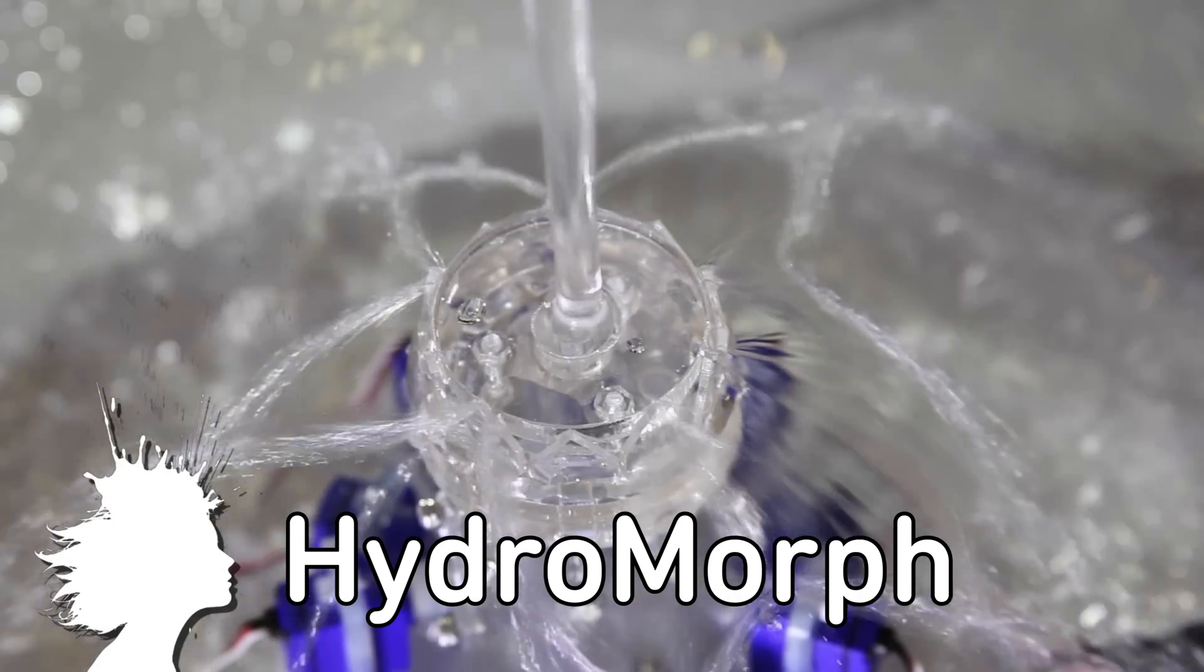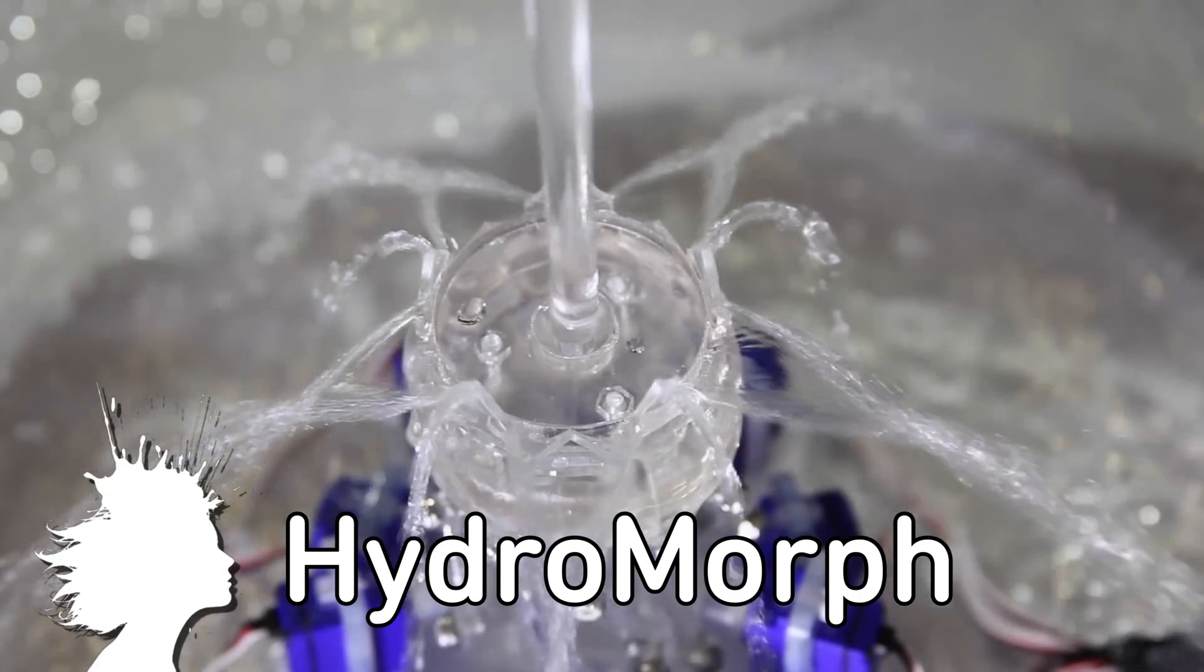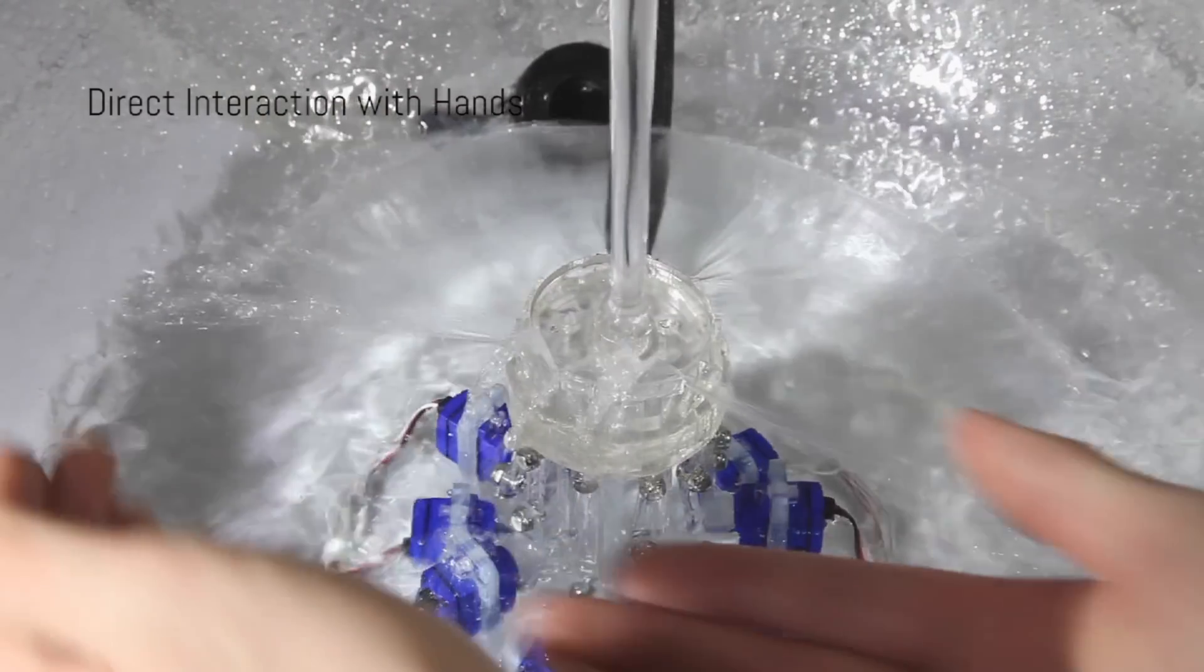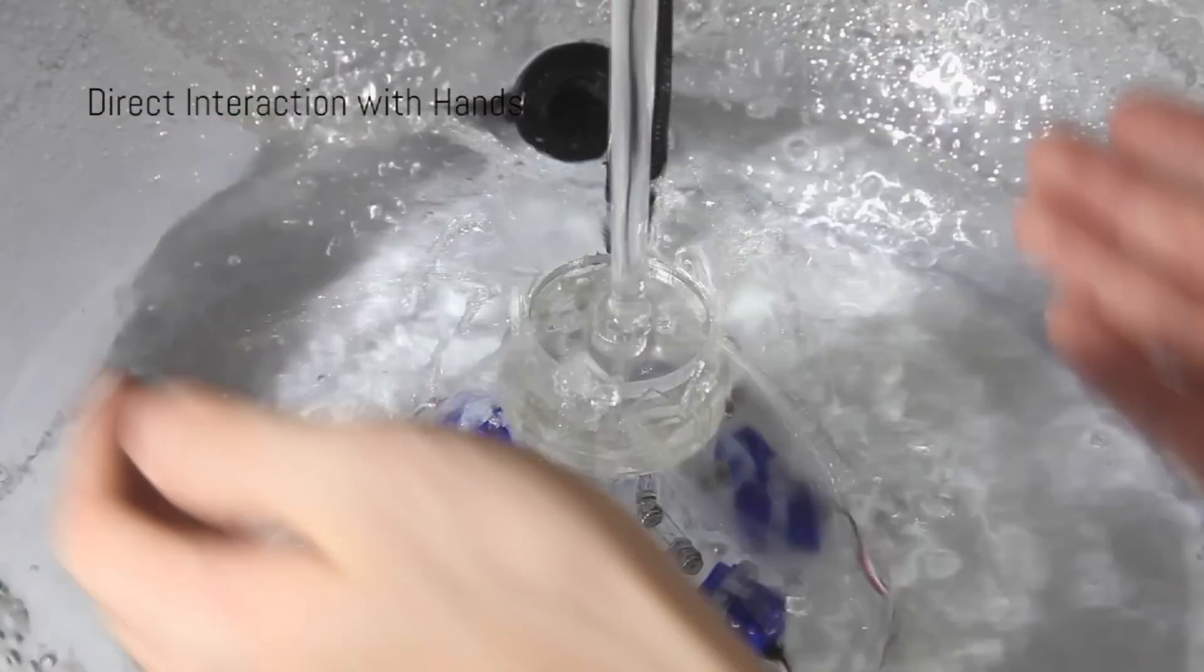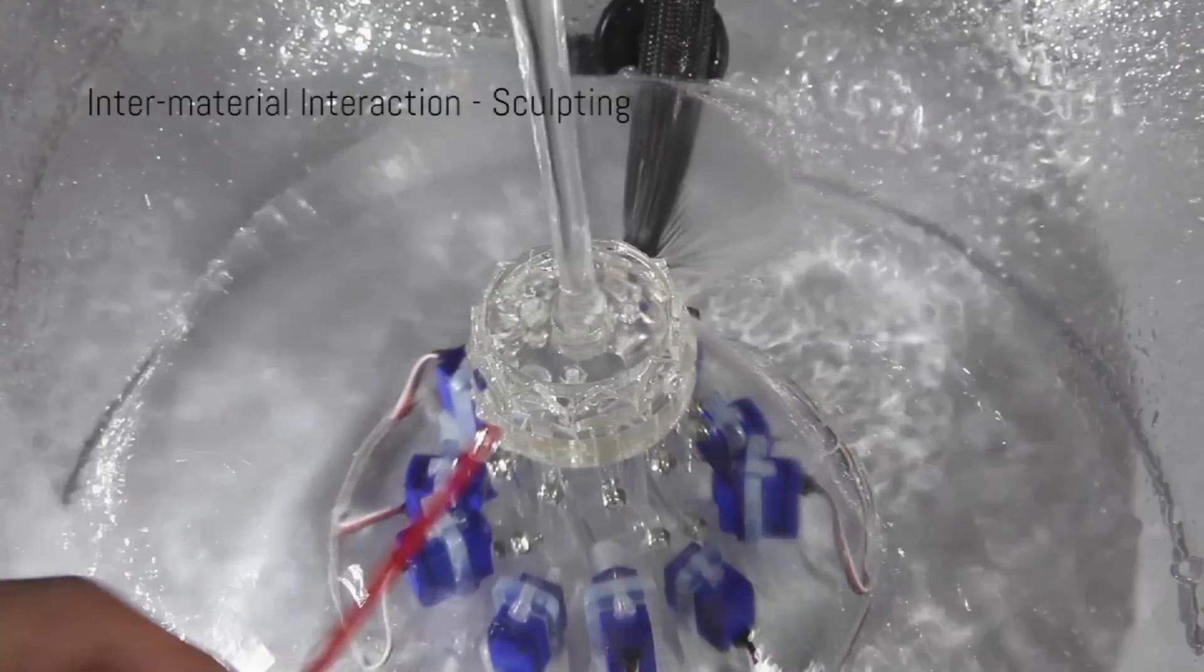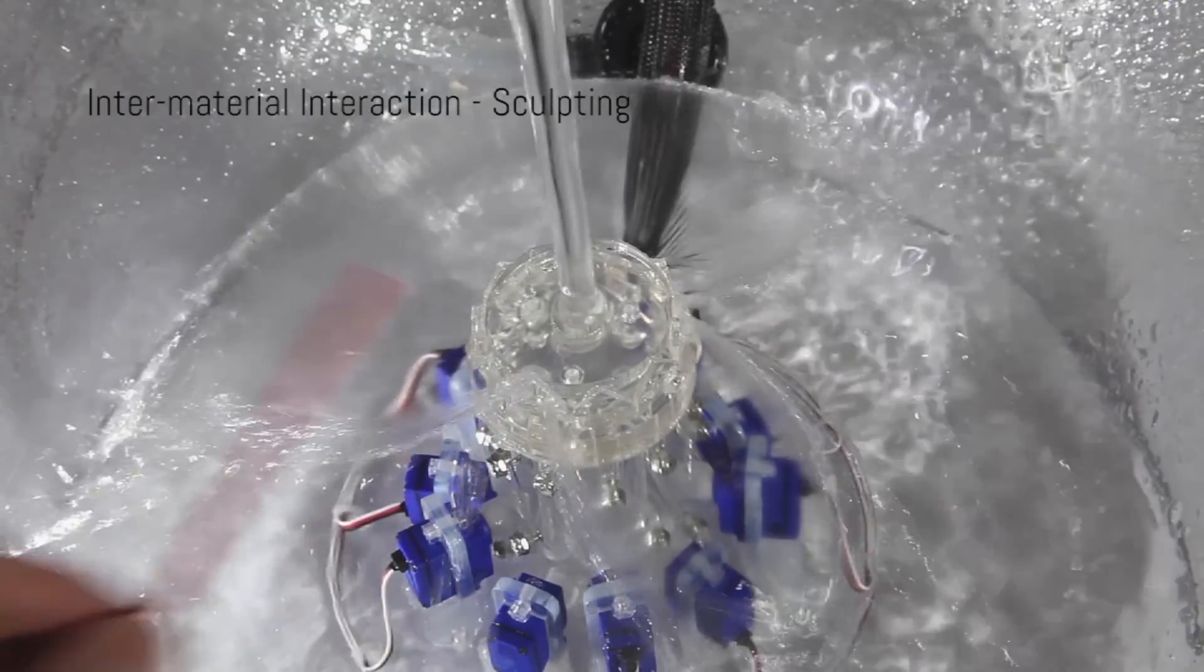Finally, Hydro Morph is a water shaping device for display and interaction. Potential applications include the water purposefully avoiding your hands if the temperature is too hot or showing you different shapes to indicate the weather or if the water is safe to drink. Honestly, I'm showing you this just because I think it looks cool.